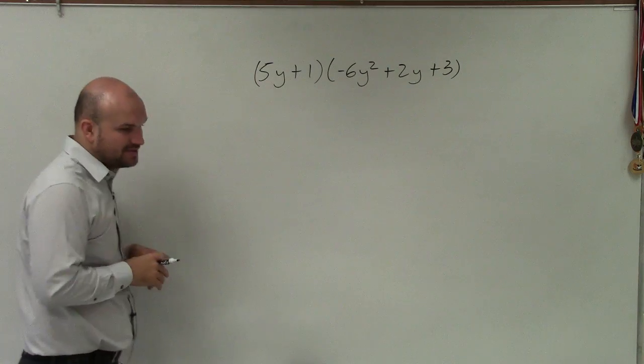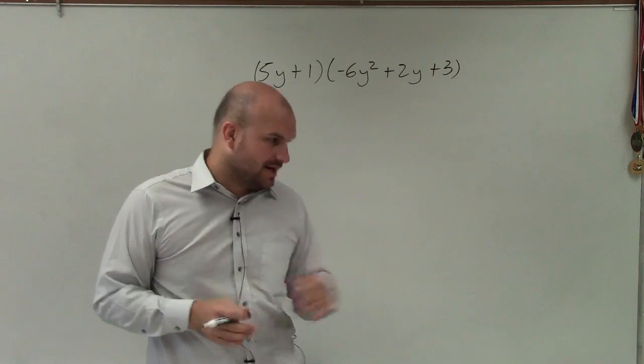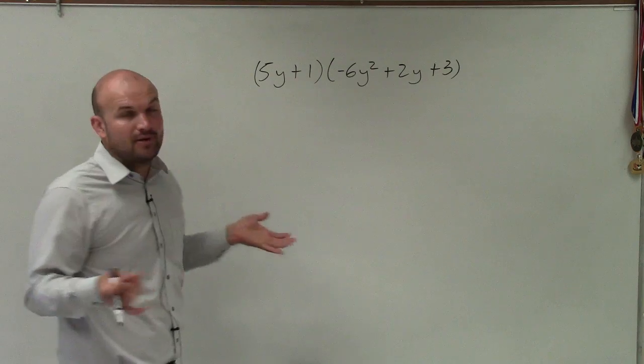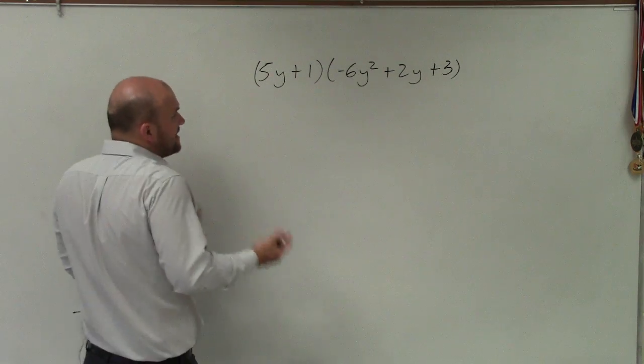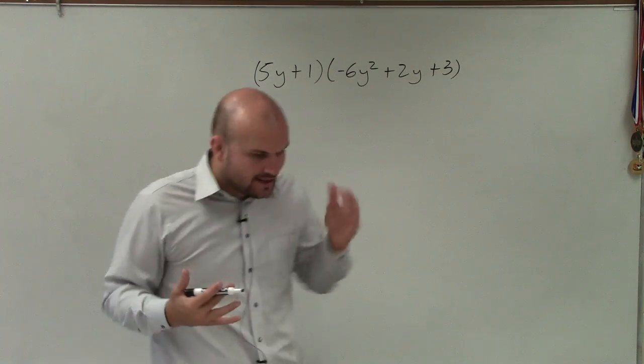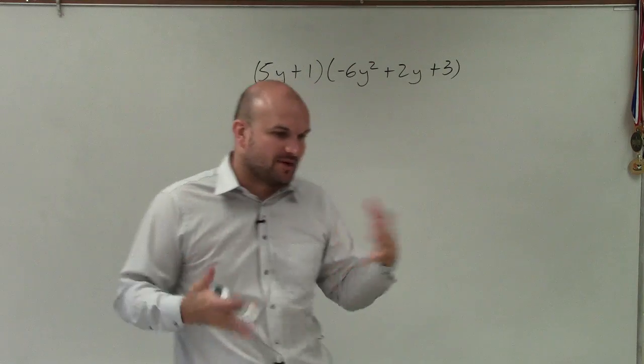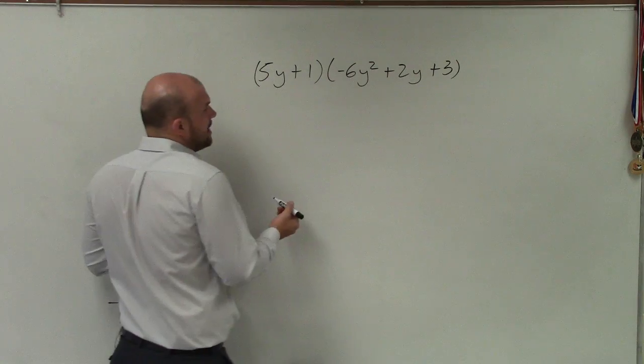And to go ahead and do this, what I'm simply going to do is, rather than using the box method, I'm just going to use some distributive property basic components. Because basically, when we're multiplying with an expression times another expression, we're basically using just our distributive property.